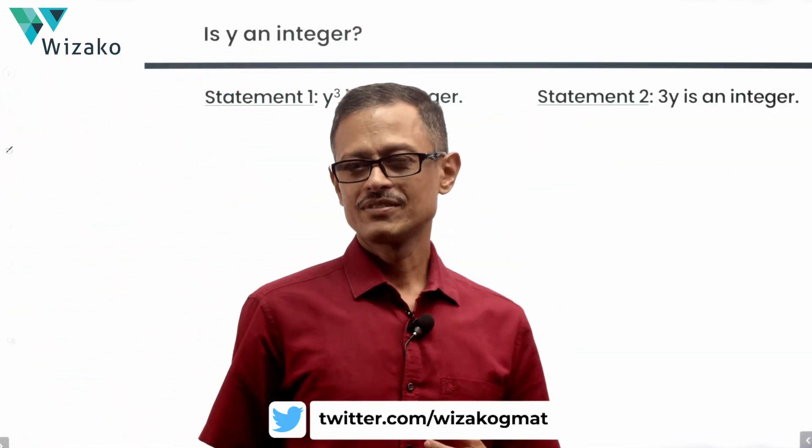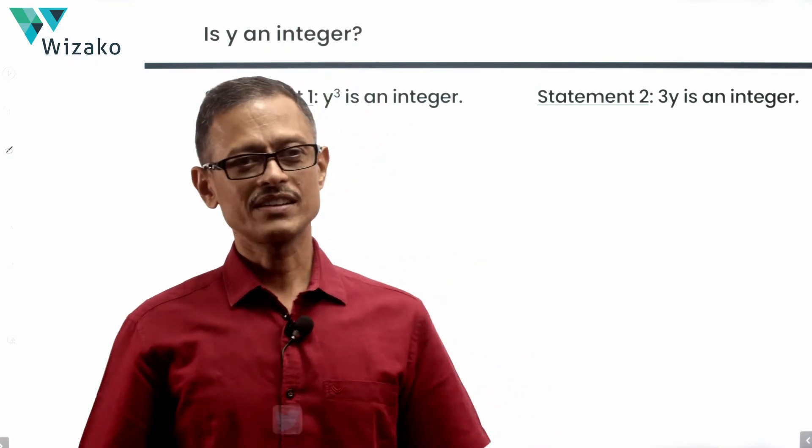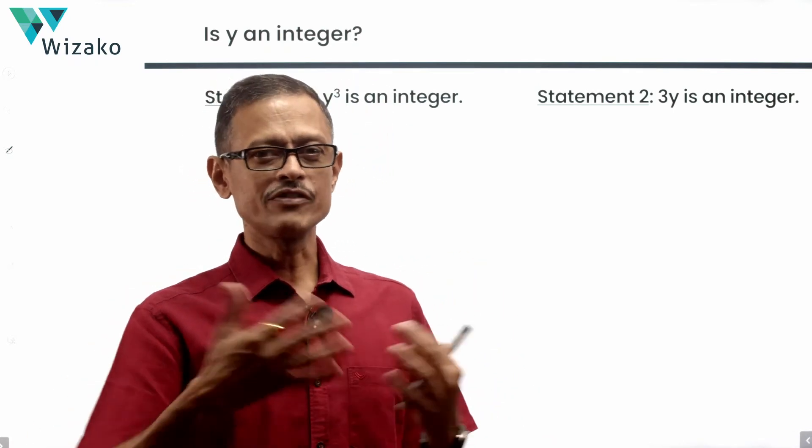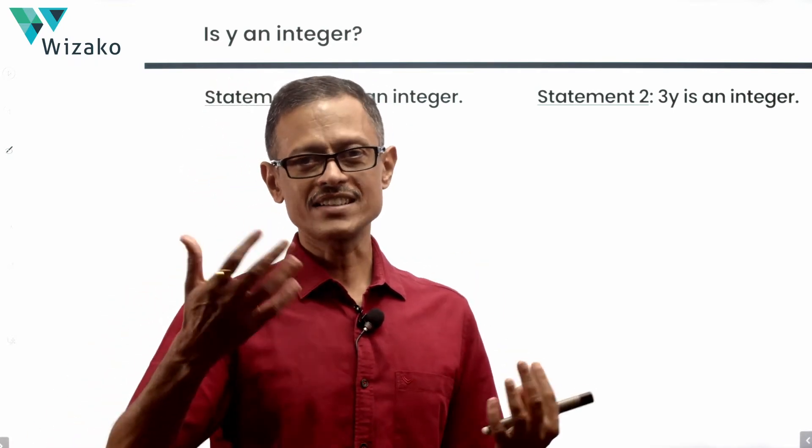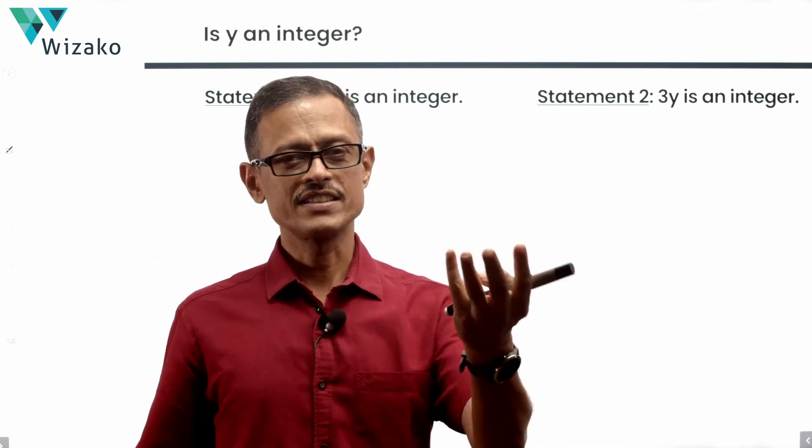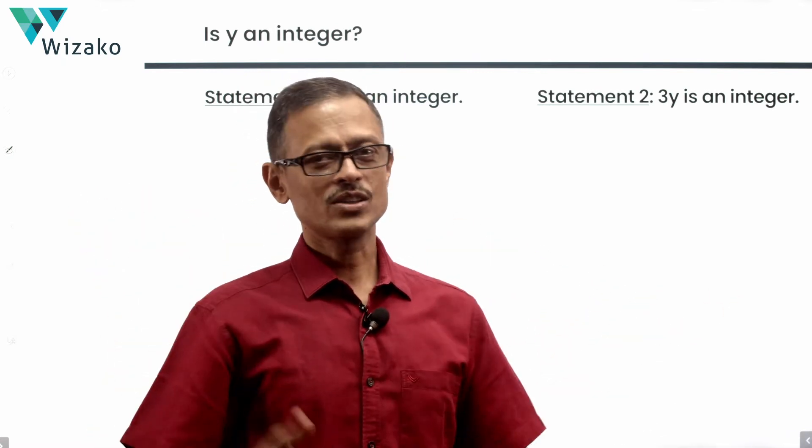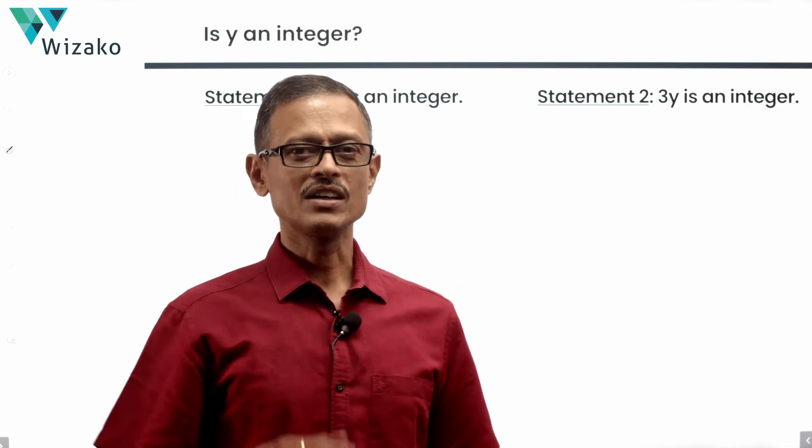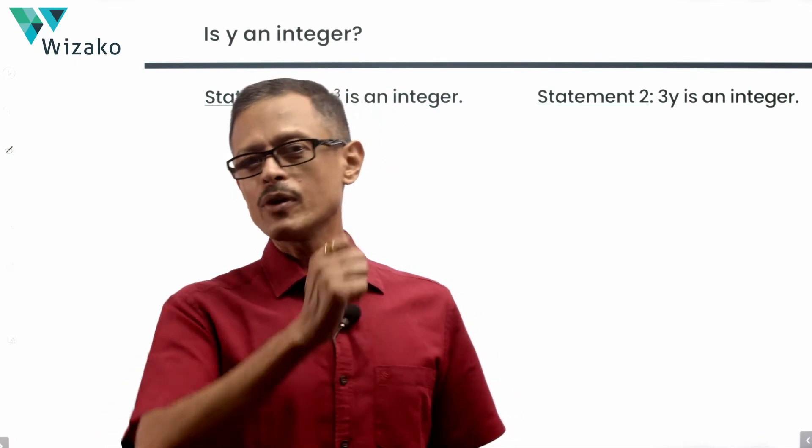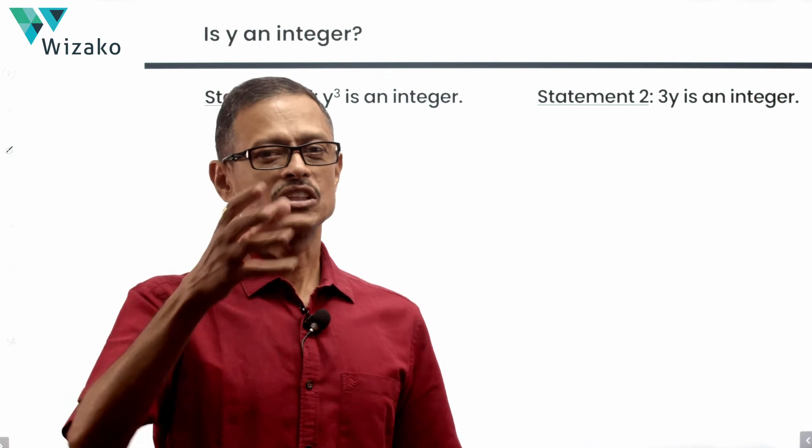Y cube is an integer. 3y is an integer. How do we make sense out of it? In the examination, if you can't figure out, basically see what your gut says. It says c, go with c. If it says e, go with e. Or you can't toss the coin because GMAT does not let you carry coins inside the examination hall. So, how do we go about it?